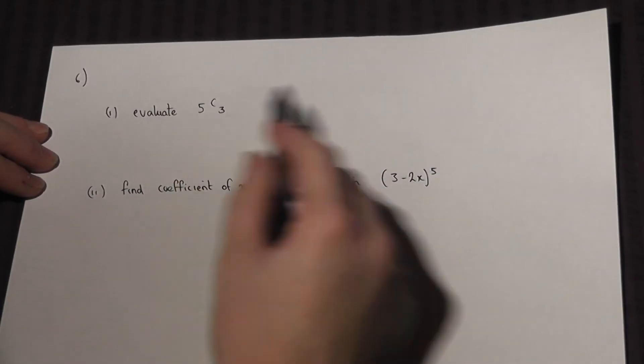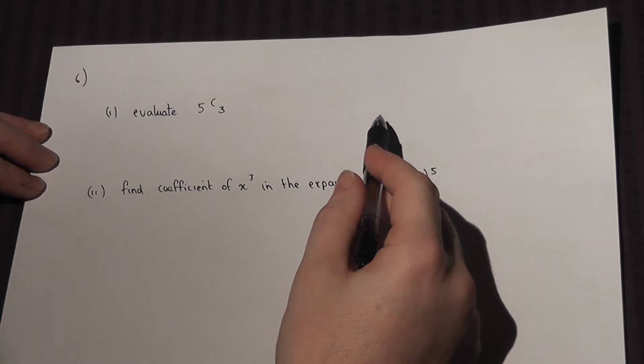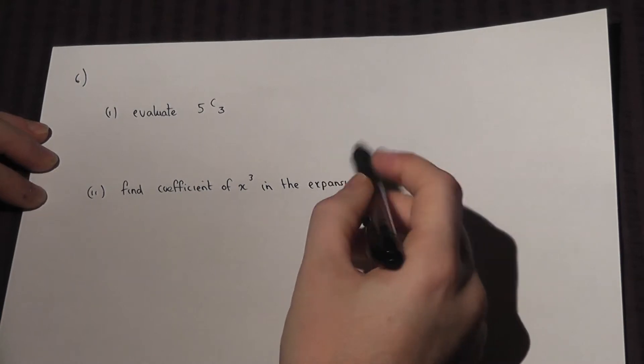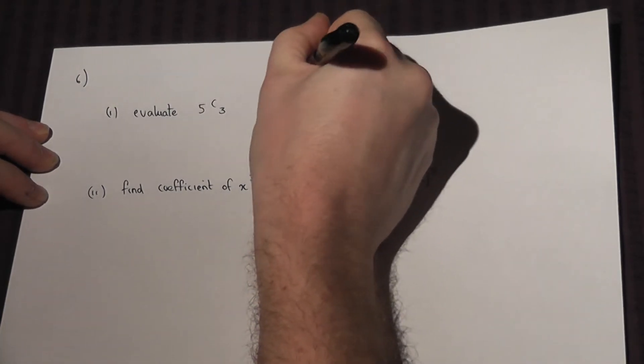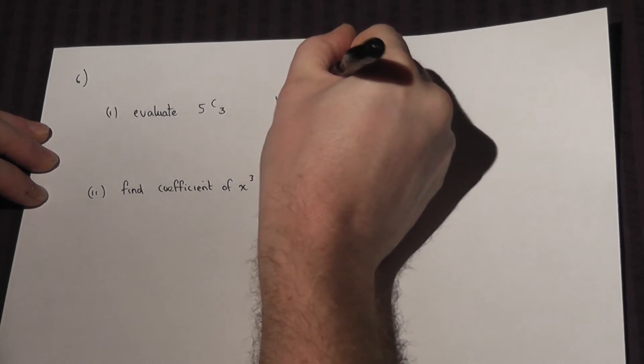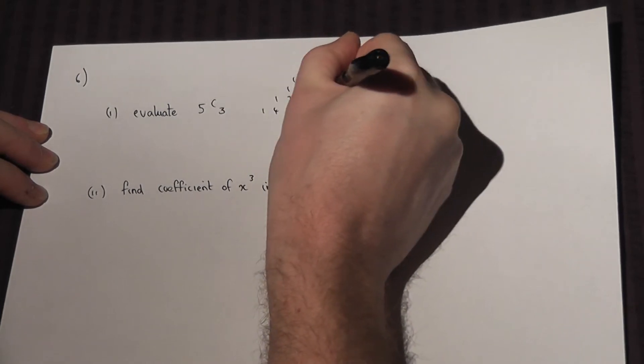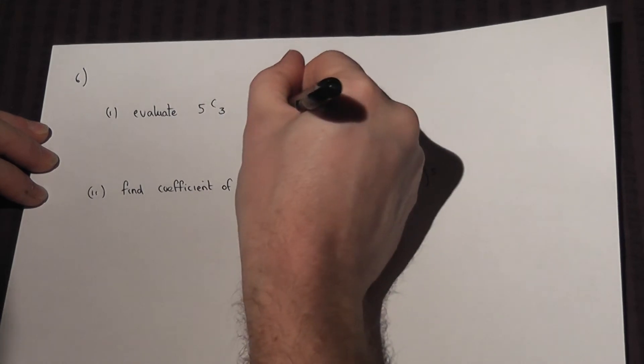To evaluate 5C3, there are two methods. The quickest is actually to draw out Pascal's triangle, down to the first row which has a 5 in it.